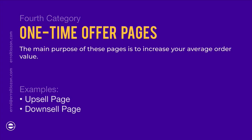Next are one-time offer pages. The main purpose of these pages is to increase your average order value. Anytime somebody purchases a product from you, you should offer them something that adds more value to what they purchased. A great example is McDonald's — when you order a burger and they ask if you want to upsize your drink or add French fries. That's basically an upsell. Examples for this are upsell page and also downsell pages.